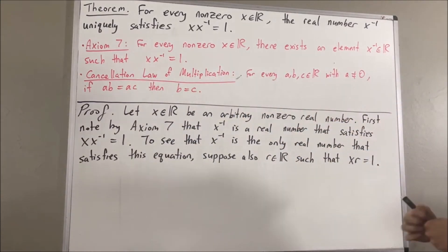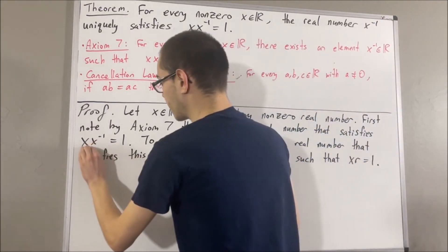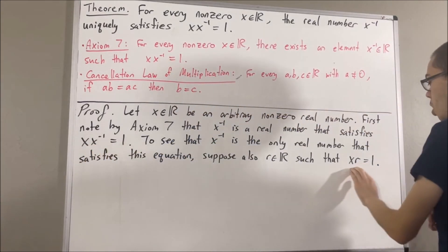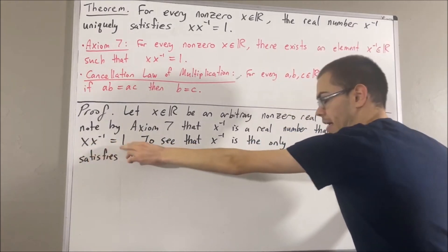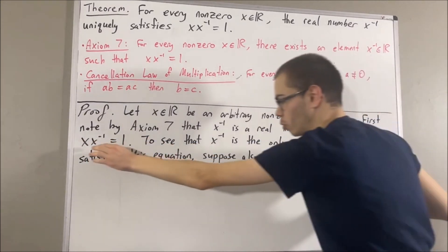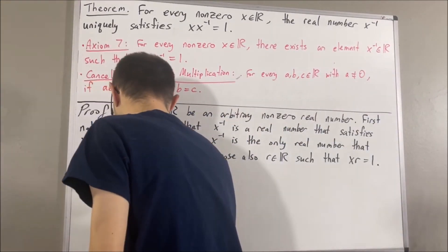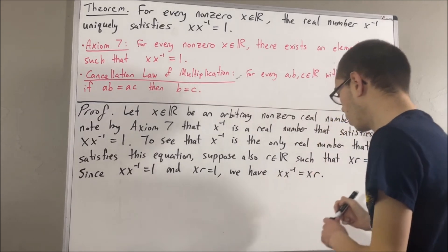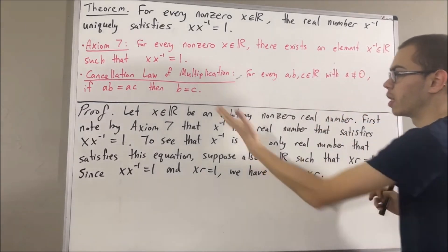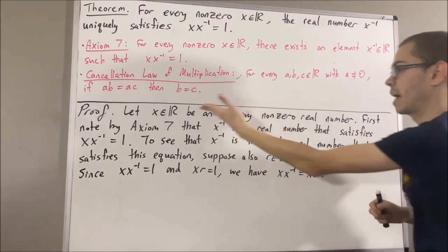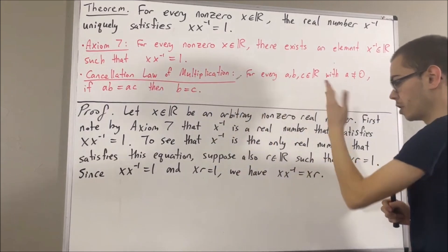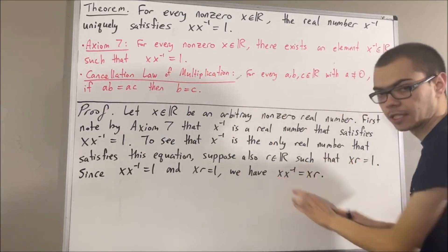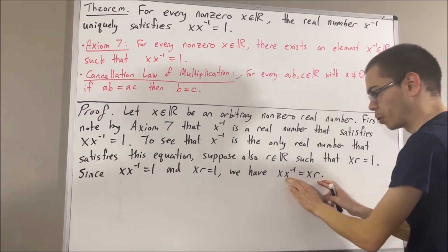From here, we want to show that the reciprocal of x is equal to r. Since x times the reciprocal of x is equal to 1 and xr is equal to 1, these two expressions are both equal to the same thing, so they must be equal to each other. But then, we can apply the cancellation law of multiplication, since x is a non-zero real number. Applying the cancellation law, we cancel out the x's, and we're left with the reciprocal of x is equal to r.